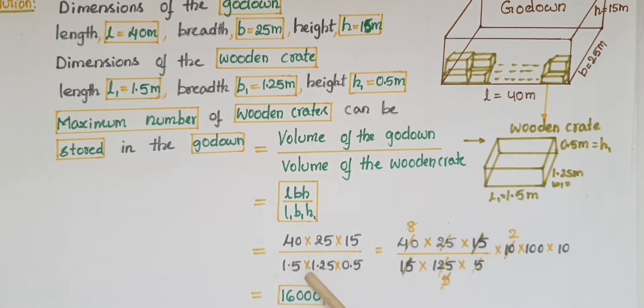Now, 1.5 is 15 divided by 10, so times 10 in the numerator, and 1.25 is 125 divided by 100, so times 100, and 0.5 is 5 divided by 10, so times 10.